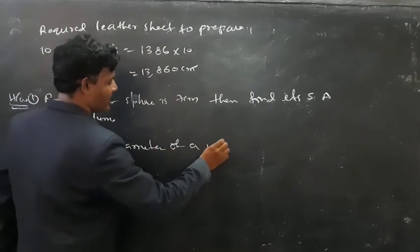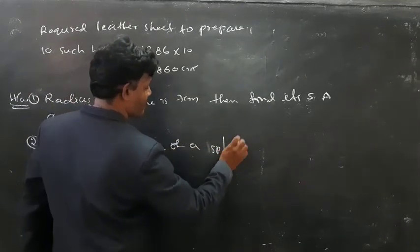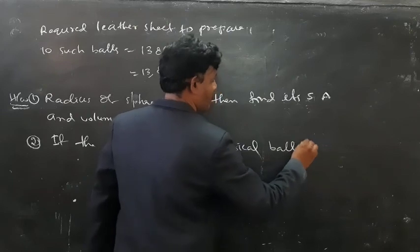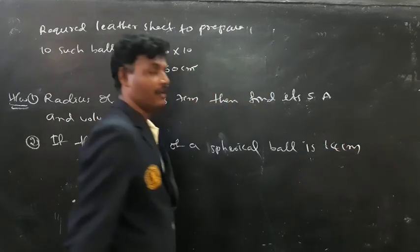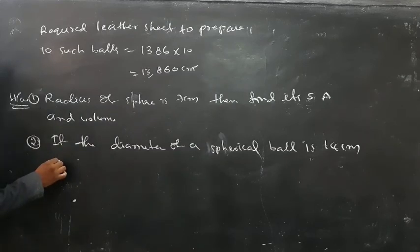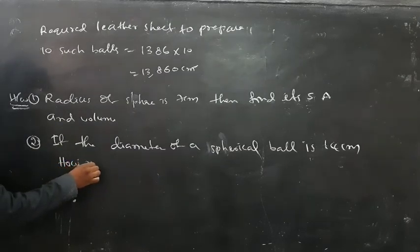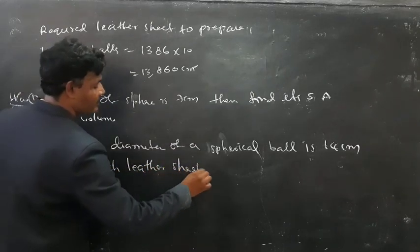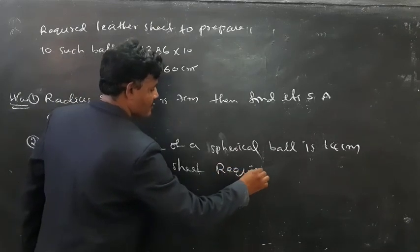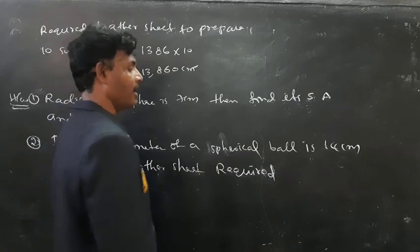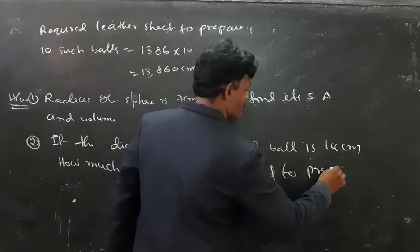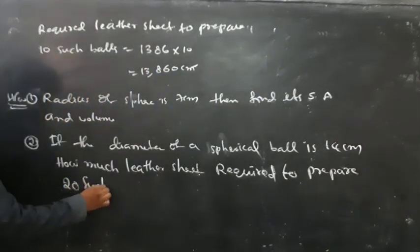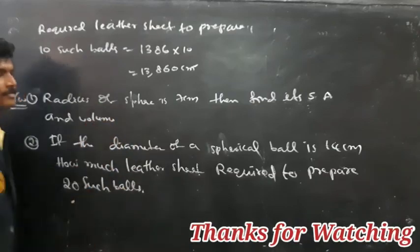The diameter of a spherical ball is 14 centimetres. If the diameter of the spherical ball is 14 centimetres, how much leather sheet is required to prepare 27 balls of this kind?